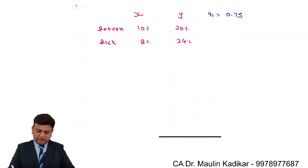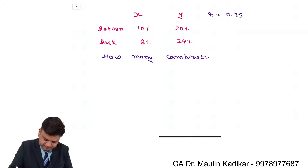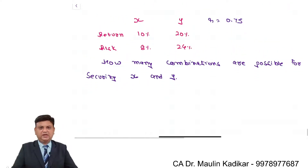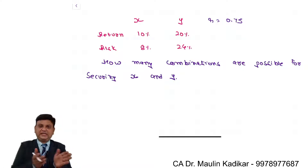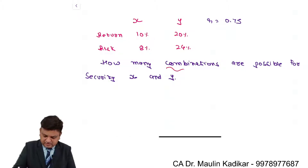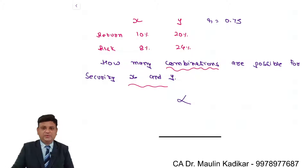My question to all of you is: how many combinations are possible for security X and Y? For example, an investor makes investment 10% in X and 90% in Y, then 20 in X and 80 in Y, 30-70, 40-60, 50-50, and so on. The answer is that there are an infinite number of combinations possible.